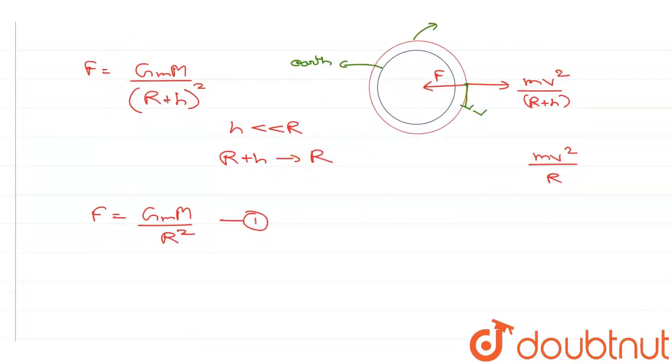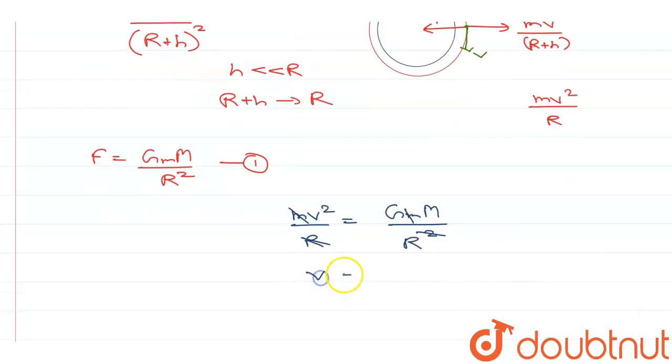So F should be equal to mv squared by R. That means mv squared by R is equal to GM upon R squared. R and R get cancelled, small m and small m get cancelled, I get v is equal to GM by R to the power 1/2.